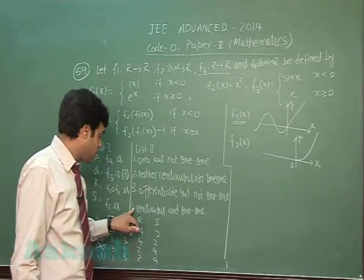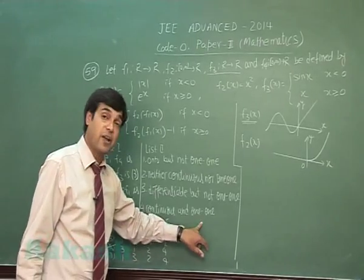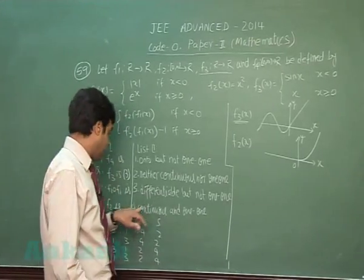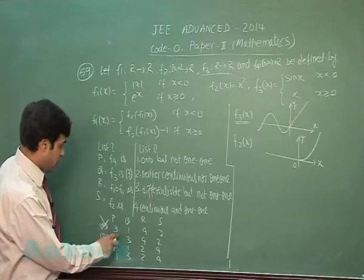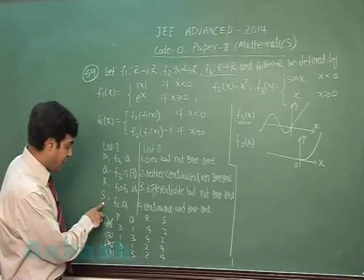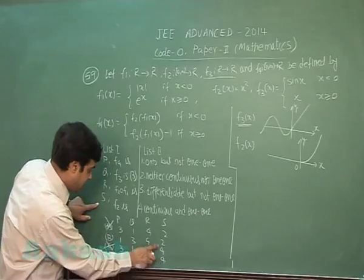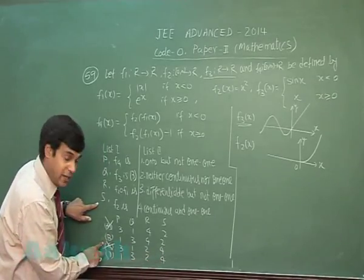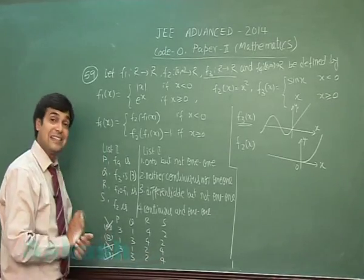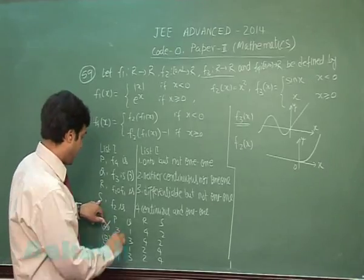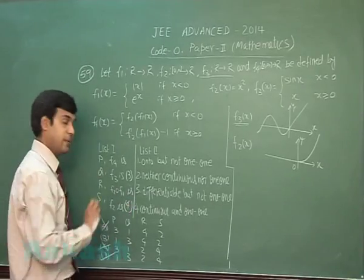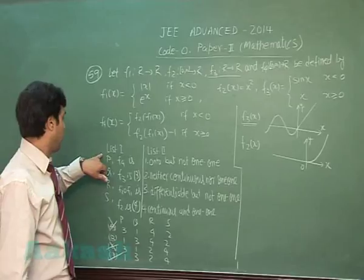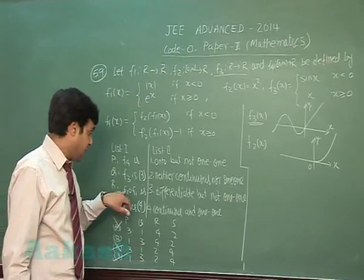Differentiable: we have already taken this code. Continuous and one-one: this is correct. So correct code is 4. So for S the correct code is 4, that is possibilities C and D. C already cancelled out, means the correct code is D.